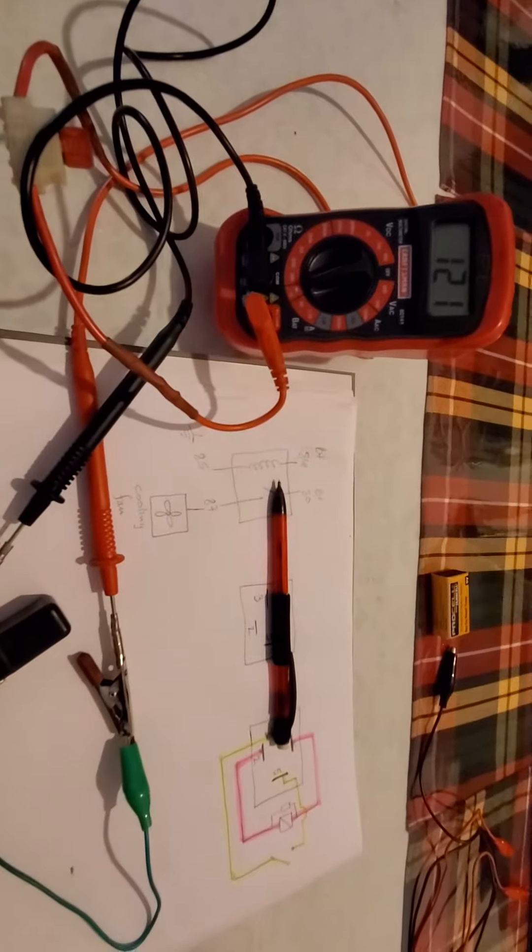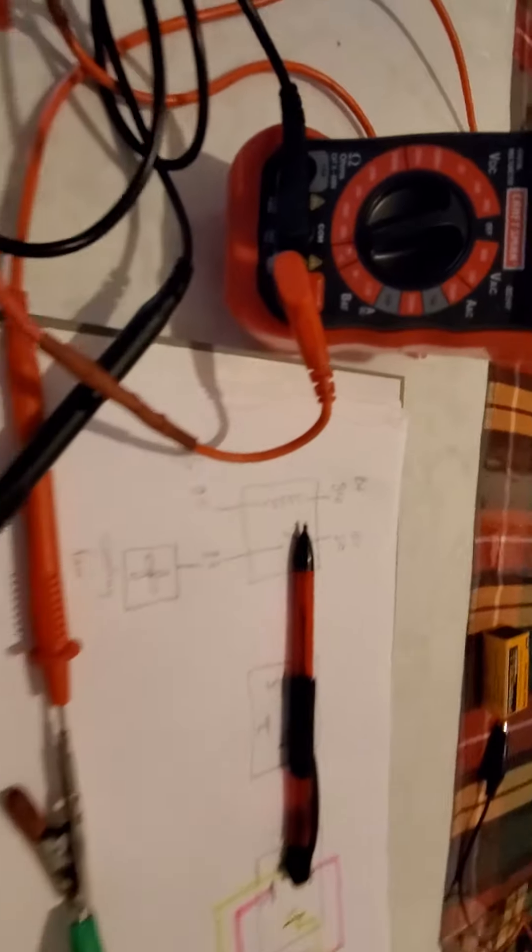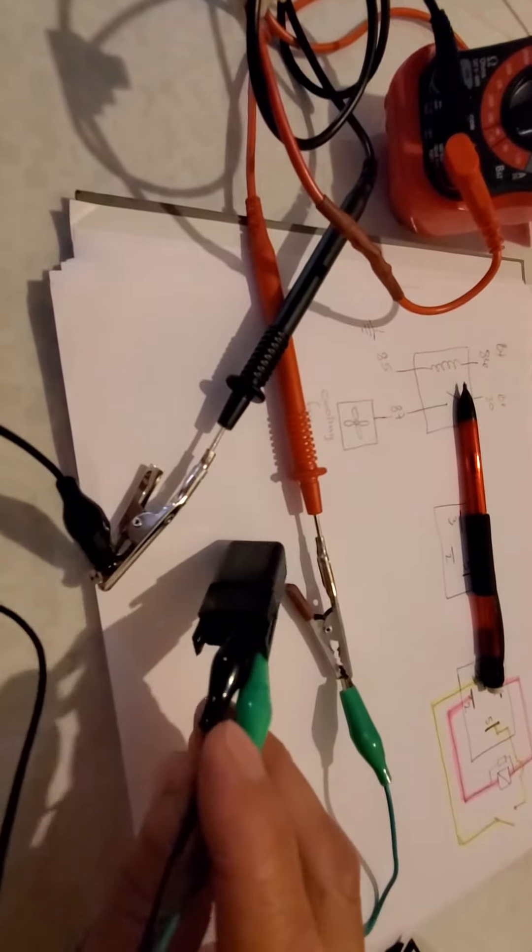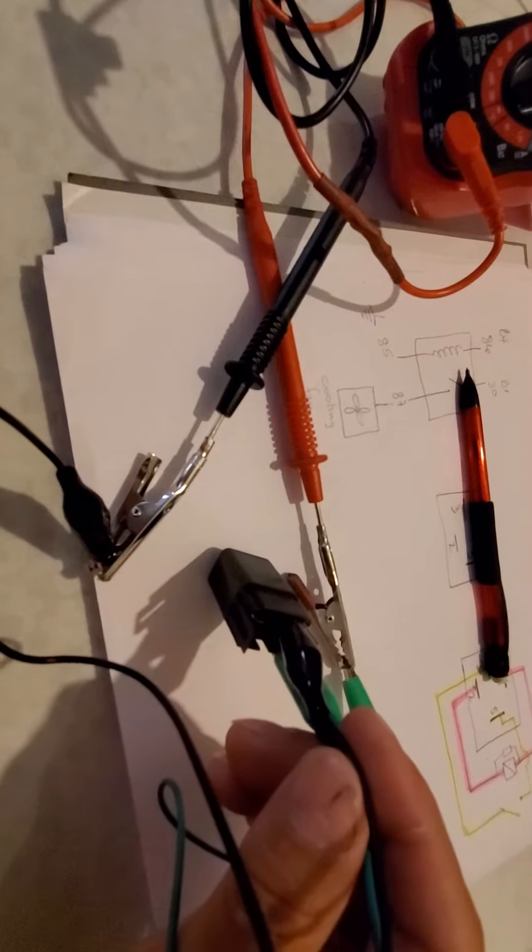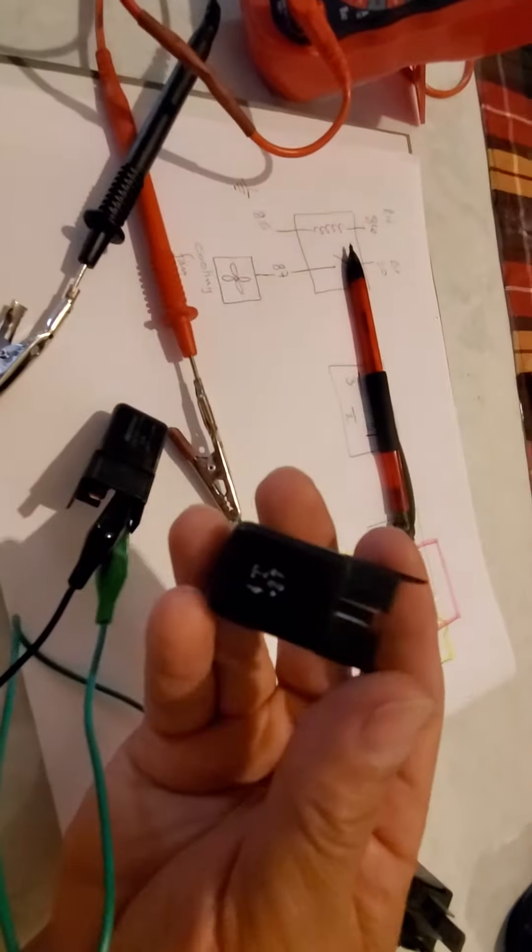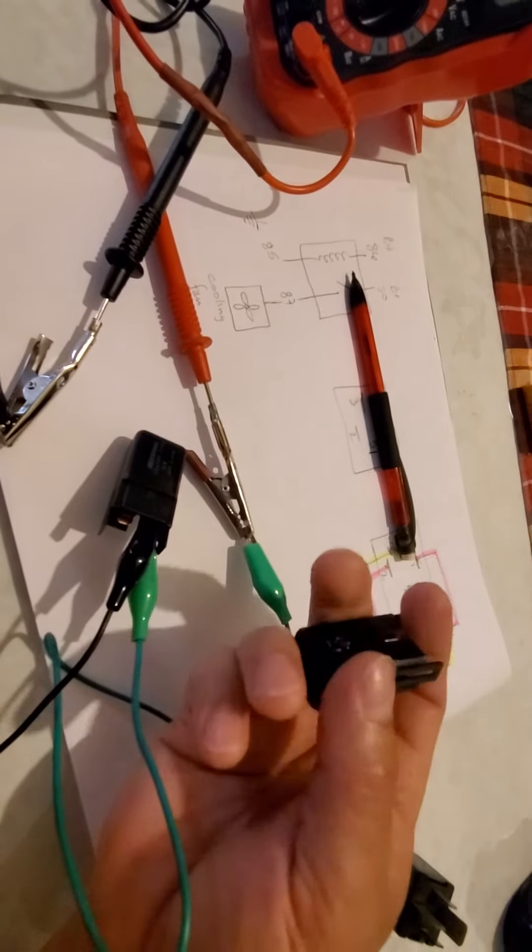What I want to show you is that my meter is set on continuity and I have already these two alligator clips hooked up to a relay just like this one. As you guys can see it doesn't have no joints.